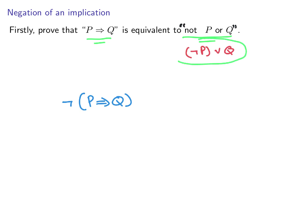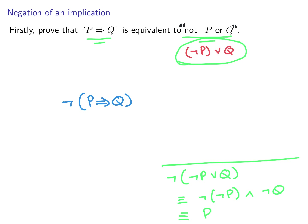If we know that P implies Q is equivalent to 'not P or Q,' then negating P implies Q is the same as taking the negation of 'not P or Q.' Using De Morgan's law, the negation of 'not P or Q' is 'not(not P) and not Q,' which simplifies to 'P and not Q.' Therefore, the negation of P implies Q is P and not Q.